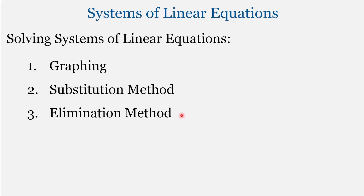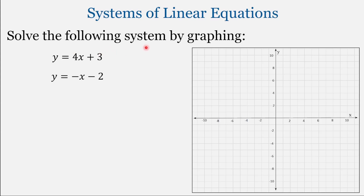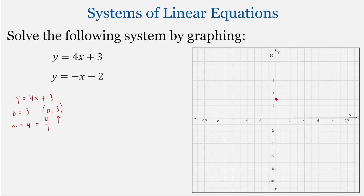Algebraic methods like substitution or elimination may offer a more efficient and accurate approach, and we'll look at those in a future lesson. Let's try another example — solving the following system by graphing. Both equations are in slope-intercept form. For the first equation, y equals 4x plus 3, the y-intercept b equals 3, giving us the ordered pair (0, 3). The slope equals 4, written as 4 over 1, so we rise 4 and run to the right 1 from the y-intercept.